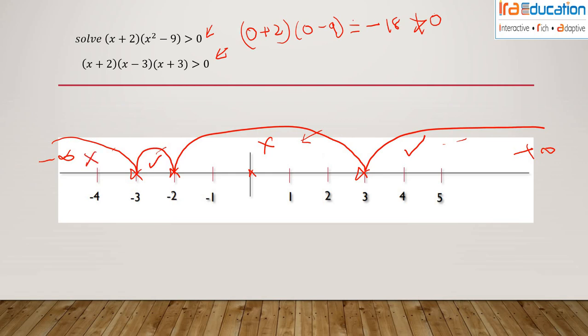The inequality holds good in the interval (-3, -2) and also from 3 onwards. Therefore, x belongs to the open interval (-3, -2) union (3, infinity). Hope you understood this problem.